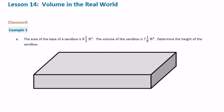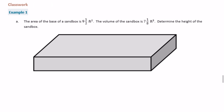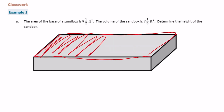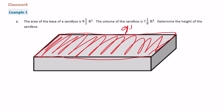The area of the base of a sandbox is 9 and 1/2 feet squared. The volume of the sandbox is 7 and 1/8 feet cubed. Determine the height of the sandbox. The area of the base — the top or bottom part — is 9 and 1/2 feet squared. We know the volume is 7 and 1/8. Volume is equal to area of the base times the height.